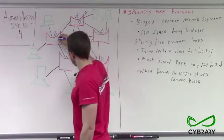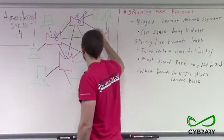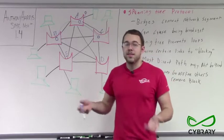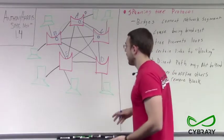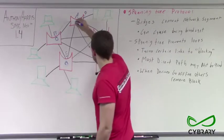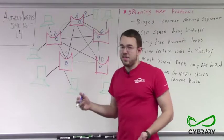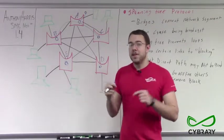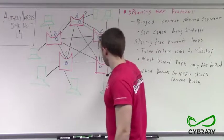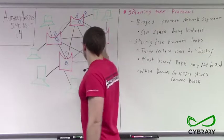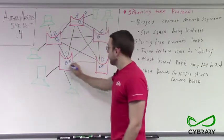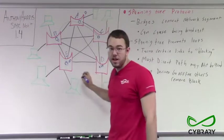Bridge A sends the packet to bridge B and also to bridge C — it sends it to both of them. Bridge C and bridge B say, this is a broadcast packet, I'm not going to send it back to the person who sent it to me, but I'm going to pass it along to everyone else I'm connected to. So bridge C sends this broadcast packet to bridge B, E, and D. Bridge B sends its broadcast packet to bridge C, E, and D. And bridge E sends its broadcast packet to bridge B, C, and D.